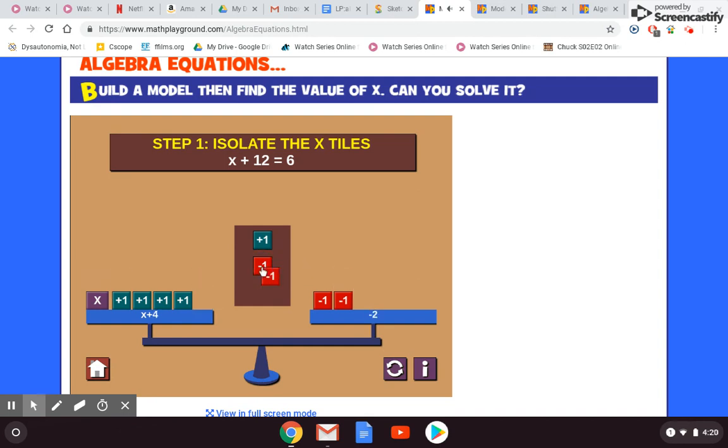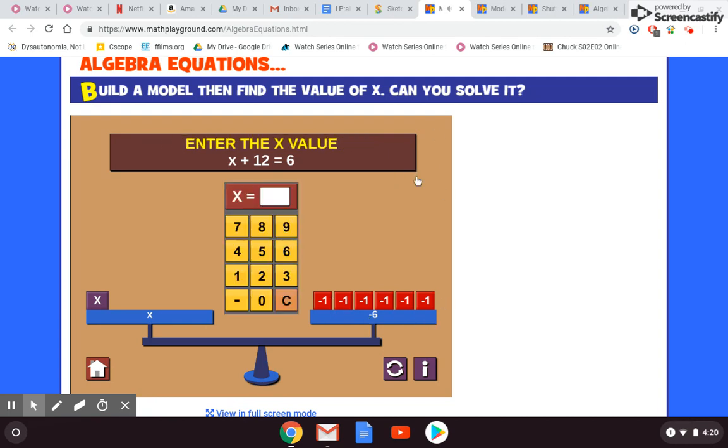As I keep going, look what's happening on the right. We canceled all the positive ones and we're getting the negative ones over there. When we finally get the x all by itself, it balances with negative 6. So we click our green checkmark and x equals negative 6. That's a great way to see how the equation works and to also check your answers.